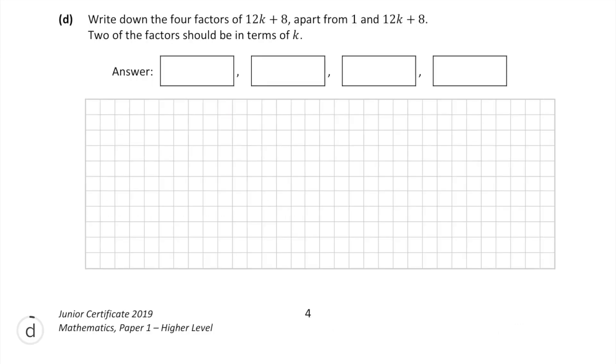Moving on to part d, we have to find 4 factors of 12k plus 8, apart from 1 and itself. 12 and 8 can both be divided by 4, so we can rewrite this as 4 times 3k plus 2. So both 3k plus 2 and 4 are factors of 12k plus 8.